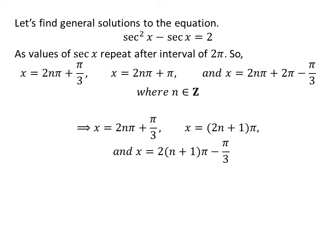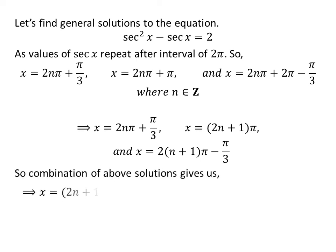Further simplification gives us the general solutions as: 2nπ plus π/3, 2(n+1)π minus π/3. Combining solutions, the general solutions are: (2n+1)π and 2nπ plus or minus π/3.